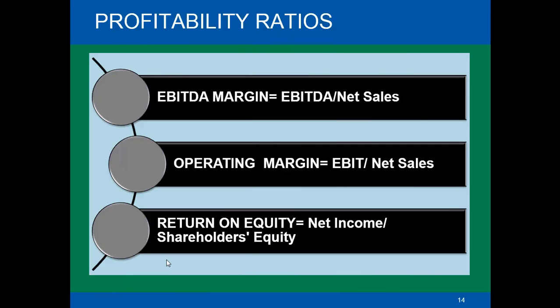Now we'll understand what operating margin is. The formula for operating margin is EBIT divided by net sales. EBIT stands for Earnings Before Interest and Taxes. This figure measures a company's annual earnings before the subtraction of interest payments and taxes. EBIT is also referred to as operating earnings and is a very good measure of how well a company is managed. It measures both overall demand for the company's products or services and the company's efficiency in delivering them.